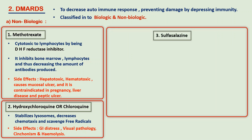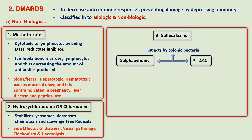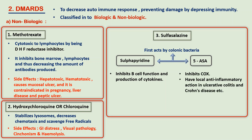The next drug is sulfasalazine. Colonic bacteria split this into sulfapyridine and 5-ASA (acetylsalicylic acid). Sulfapyridine inhibits B cell function and decreases cytokines — the inflammatory mediators such as tumor necrosis factor and interleukins. The 5-ASA inhibits COX and has local anti-inflammatory effects. The main side effects include hemolysis and leukopenia.